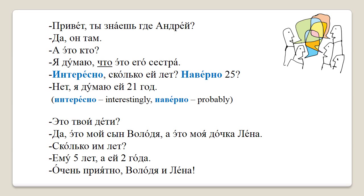Lastly, let's see how we can use this new information in a simple conversation. I'm going to read the dialogue first and then translate it. Привет! Ты знаешь, где Андрей? Да, он там. А это кто? Я думаю, что это его сестра. Интересно, сколько ей лет? Наверное, двадцать пять? Нет, я думаю, ей двадцать один год.